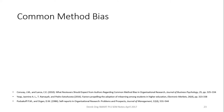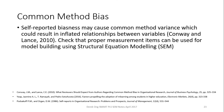My next two videos are going to be discussing this issue. Basically, what common method bias is, is that it is a self-reported biasness that may cause common method variance, which could result in inflated relationships between the variables — kind of like single source data collection.